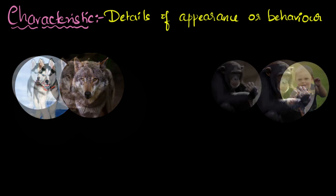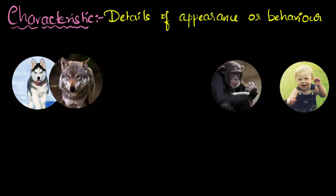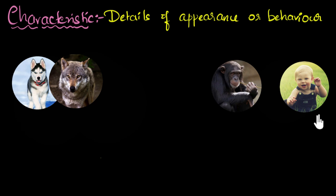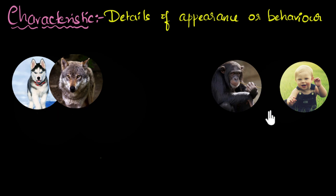To throw in another example, what about human beings? A human being is more closely related to a chimp compared to a dog. So this is how we classify things — based on how many common characteristics we find, we say how closely related they are. Dogs and wolves are very close relatives, chimps and humans are also kind of close relatives, while dogs and humans are very far relatives.